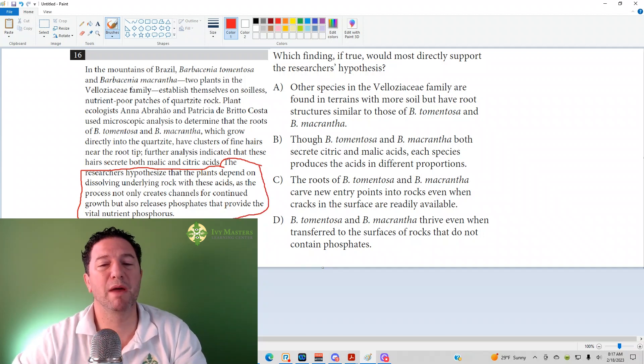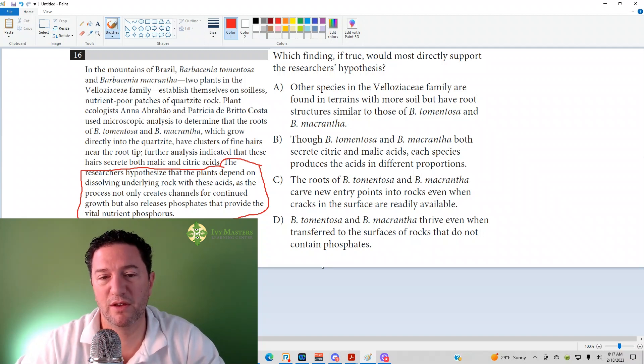We need an answer choice that's going to match that hypothesis. Answer choice A. Other species in the Velloziaceae family are found in terrains with more soil, but have root structures similar to those of B. tomentosa and B. macrantha. No, because that has nothing to do with it secreting any acid, making a tunnel, getting nutrients from the resulting conversion of the rock.